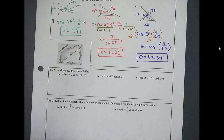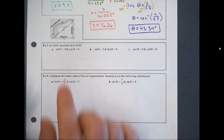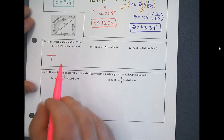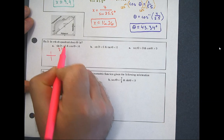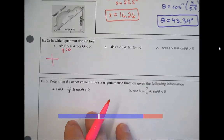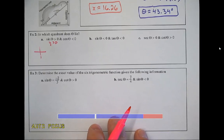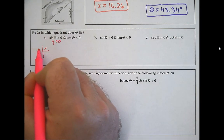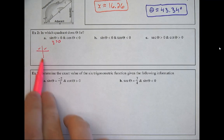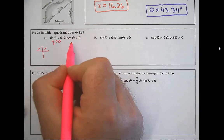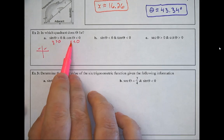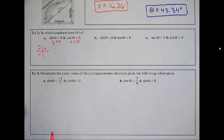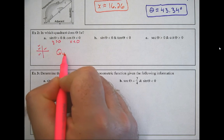In which quadrant does the angle lie? Draw a coordinate plane and think it through. Sine > 0 means y > 0 — y is positive in quadrants I and II. Cosine < 0 means x < 0 — x is negative in quadrants II and III. The quadrant that gets checked twice is quadrant II. So theta lies in quadrant II.